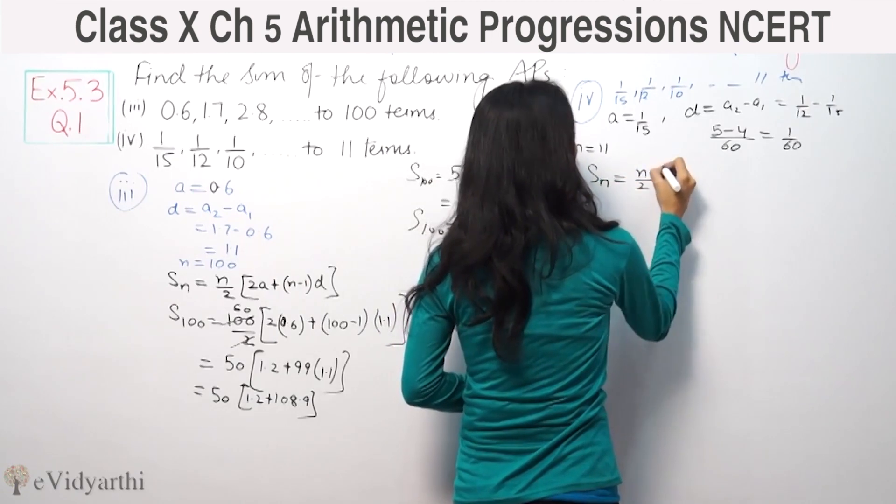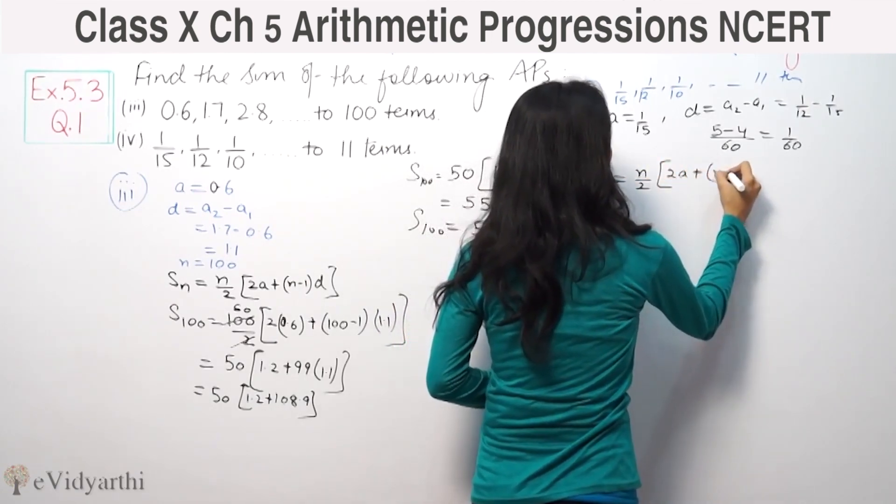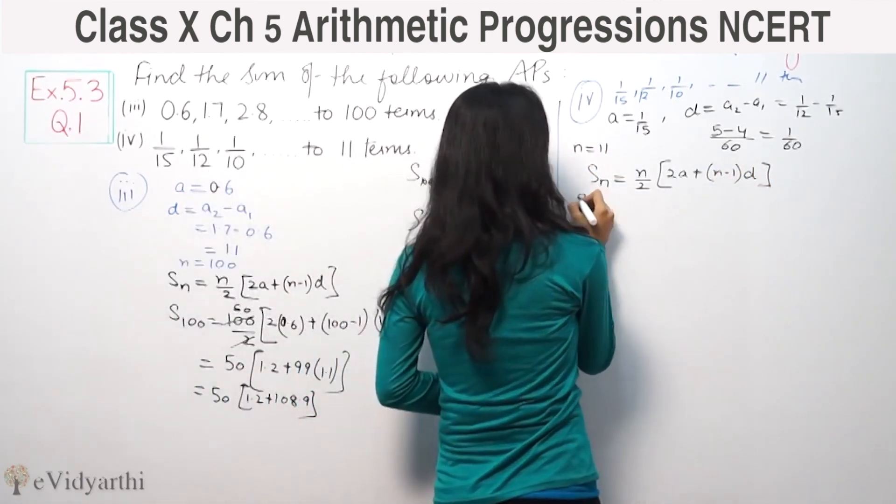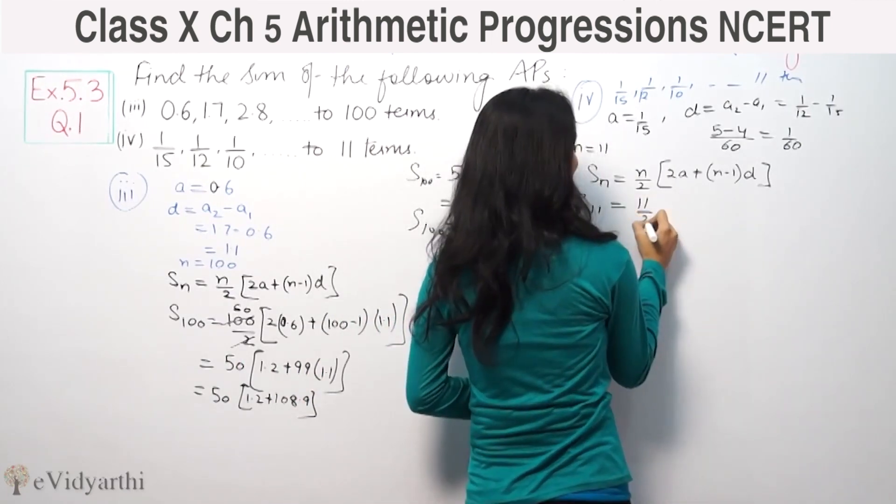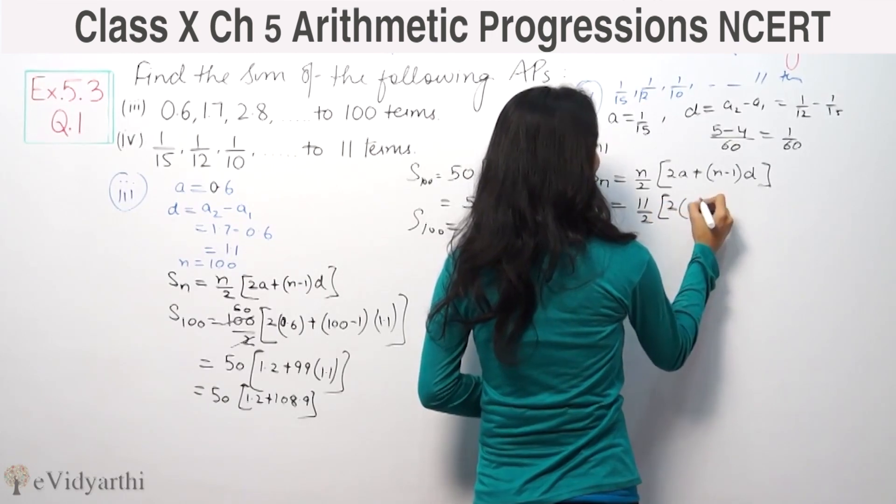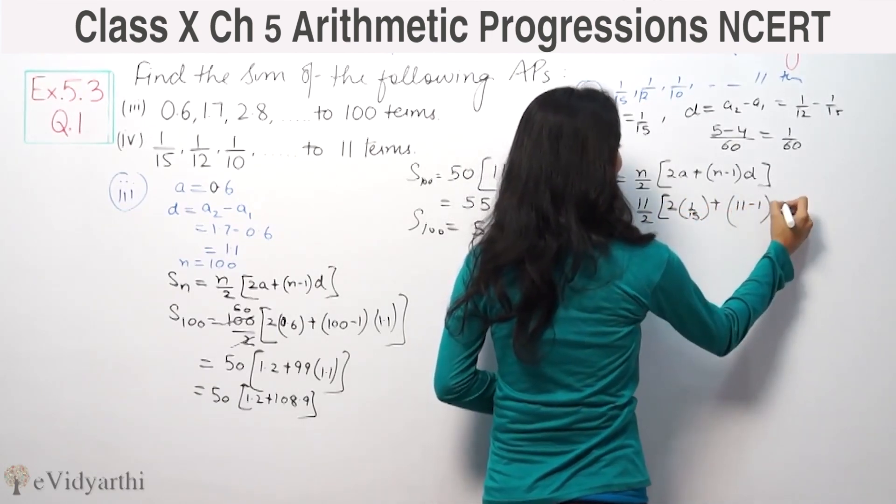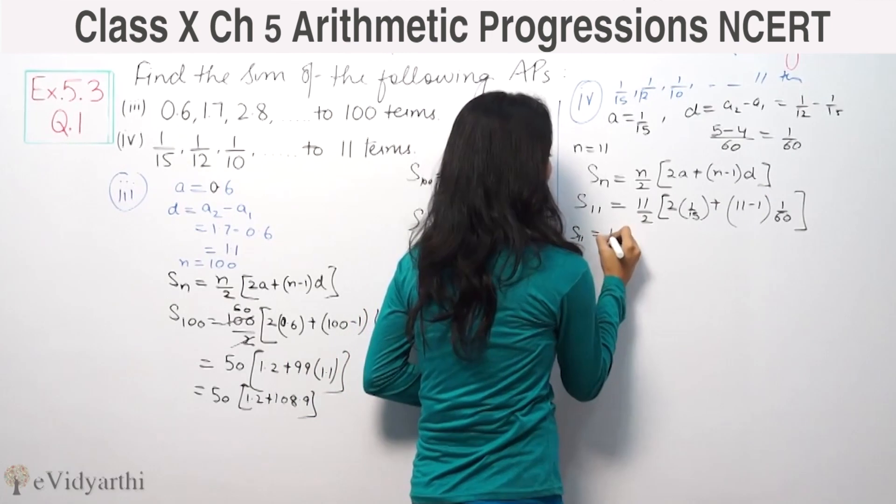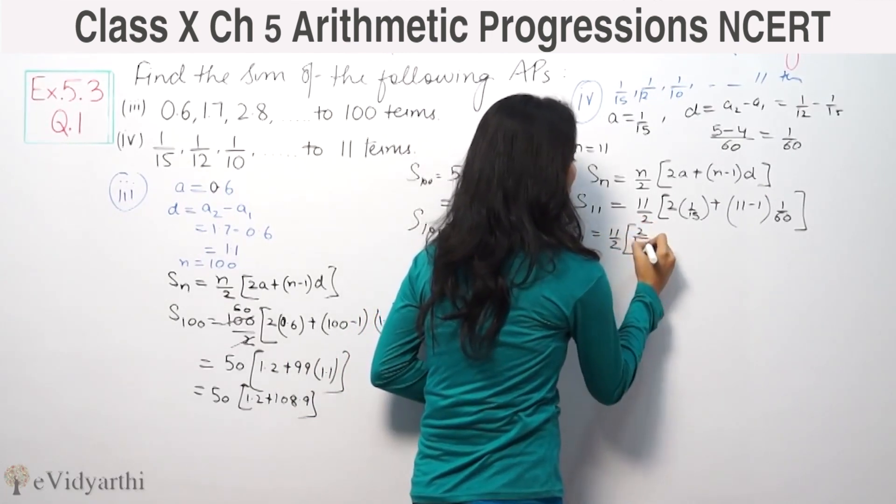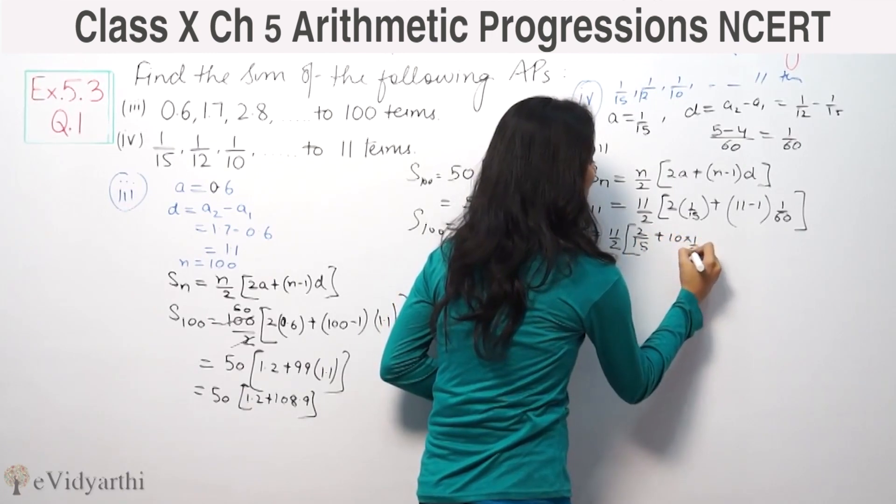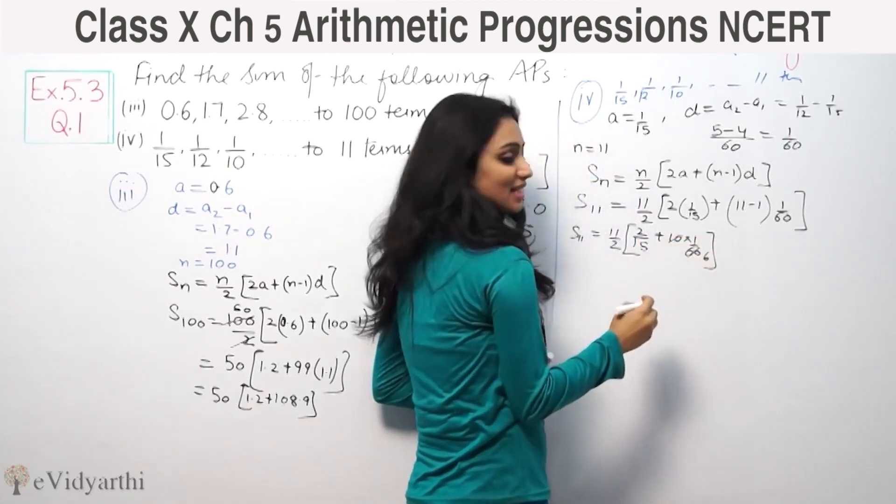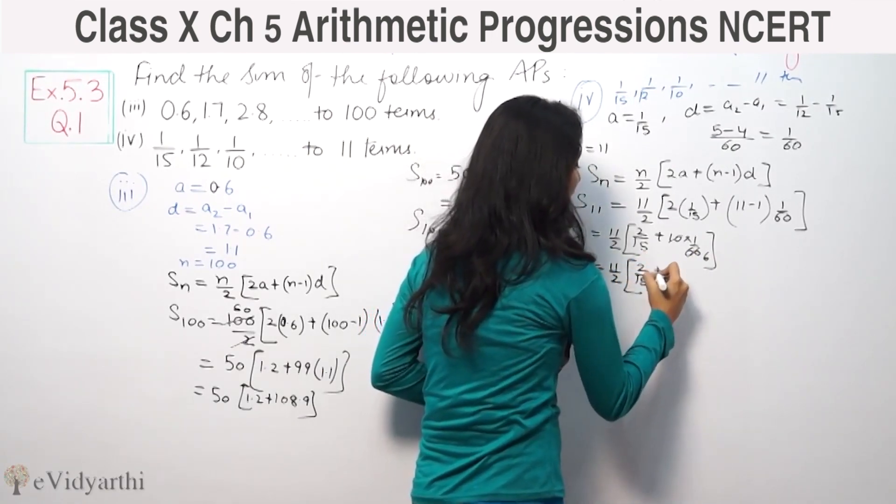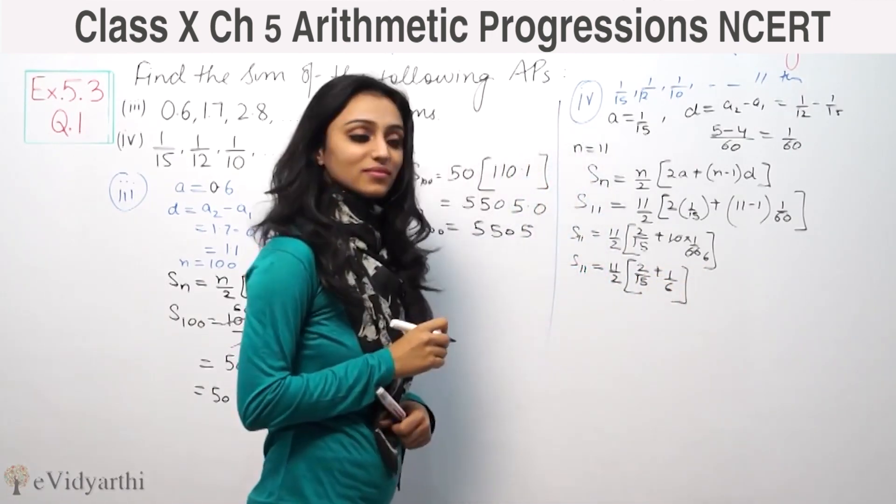The formula: Sn is equal to N by 2, bracket, 2A plus N minus 1 D. So S11 is 11 by 2, bracket, 2 times A is 1 by 15, plus 11 minus 1, D is 1 by 60. This becomes 11 by 2, bracket, 2 by 15 plus 1 by 6.